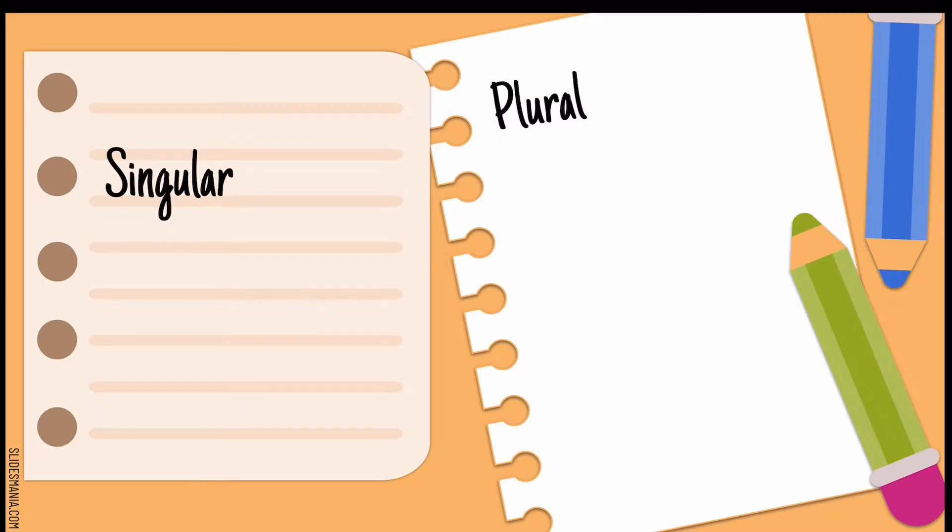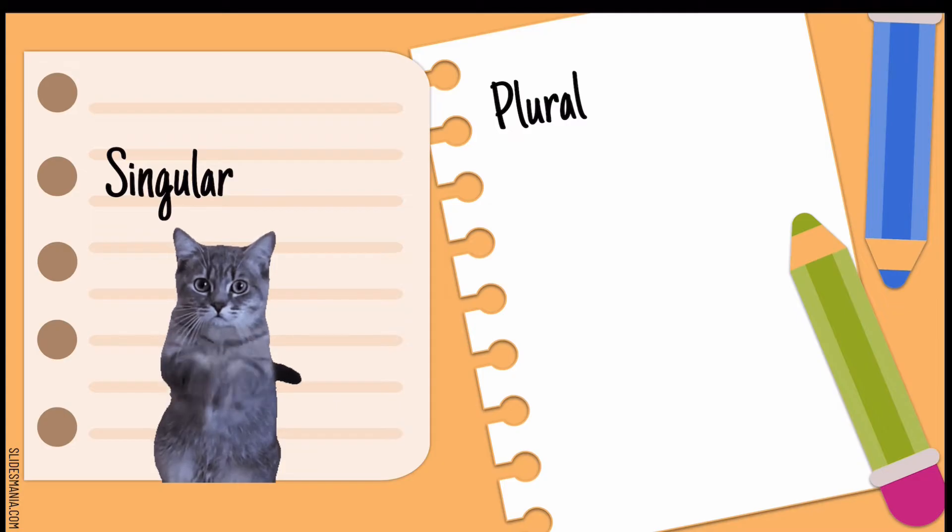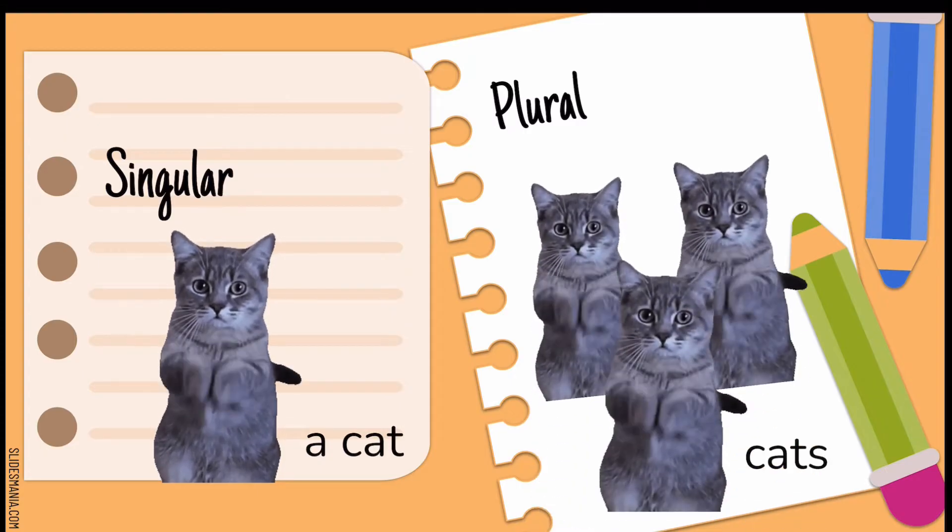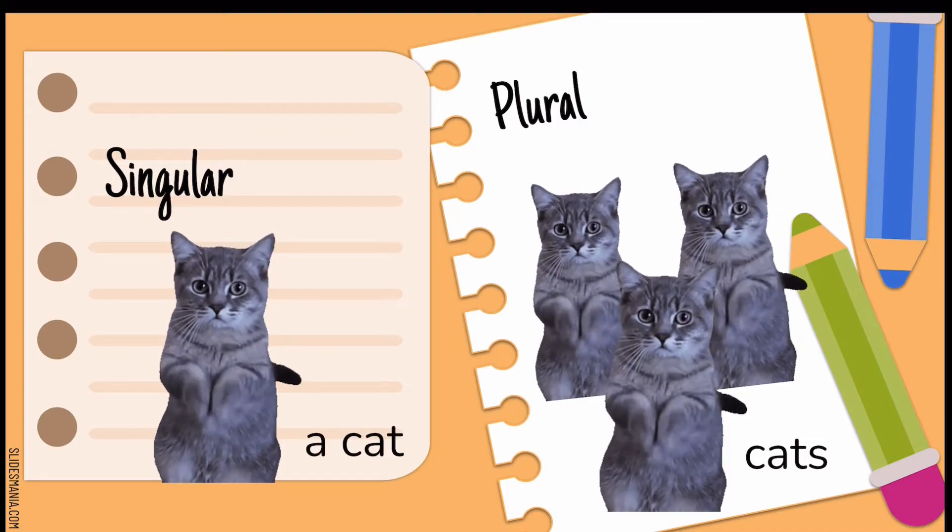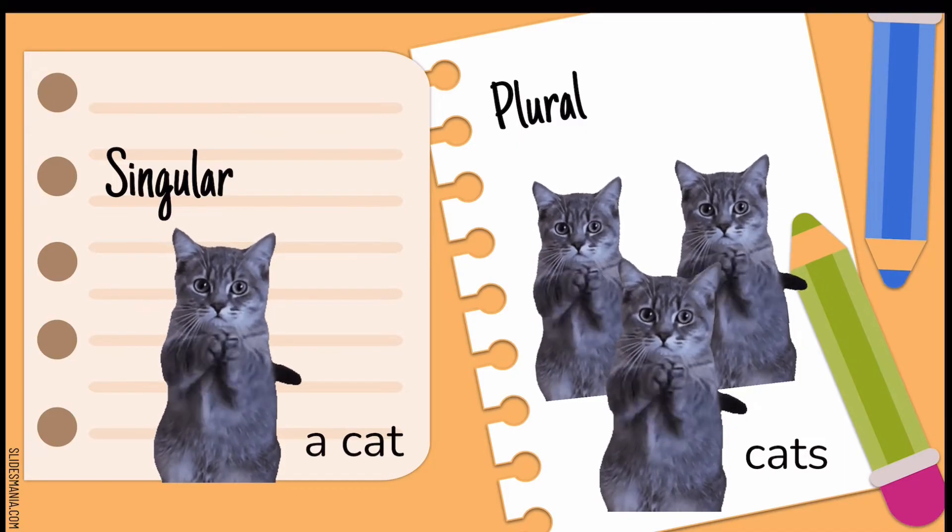So, in English, we have nouns. Nouns can be singular or plural. A singular means one, like a cat. It's in the singular form. In plural, it's cats. Three cats.